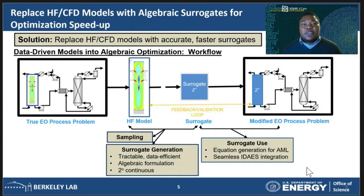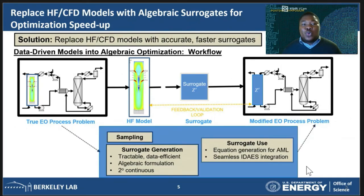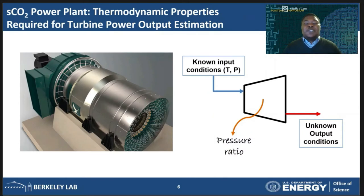My research has centered around developing tools, workflows, and pipelines to address all of these challenges. To explain the work I've been doing, I'll walk through a typical example. I'll focus on the simulation of a carbon dioxide turbine in a power plant. We are interested in the behavior of the entire power plant and the accuracy of the turbine has the most impact on the power output. When we run the turbine in a flowsheet, the inlet conditions of the turbine are actually going to be known since they are coming from another unit.